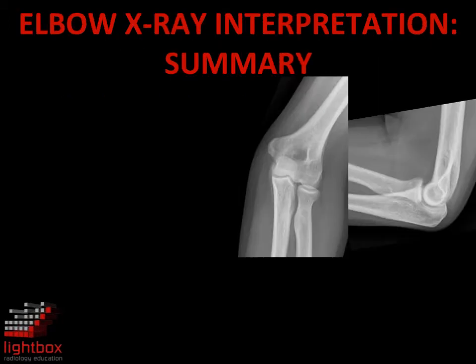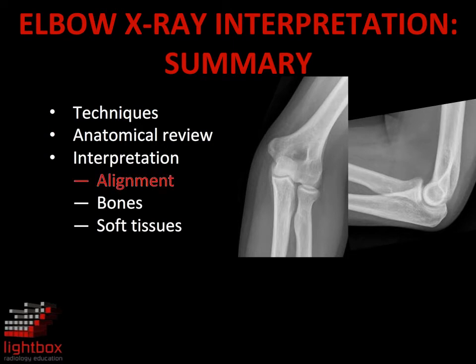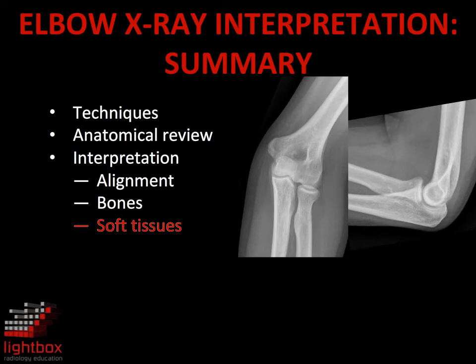This concludes our module on elbow x-ray interpretation. We've reviewed normal x-ray techniques and anatomy. In summary, x-ray interpretation of the elbow involves assessment of alignment, bones, and soft tissues. The radiocapitellar line and anterior humeral line are used to assess alignment. The most common injuries in the paediatric population are supracondylar fractures, followed by lateral condylar fractures. In adults, the most common injuries are radial head fractures, followed by coronoid process fractures. In assessment of the soft tissues, it is important to look for fat pad signs of a haemarthrosis, which may be the only sign of an occult fracture of the elbow.